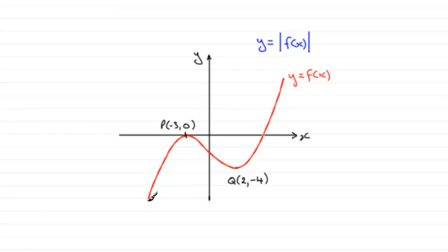Those points, starting from here all the way through here, down here and just to here — these points become positive. That is, you get a reflection of this part of the graph in the x-axis. But this part, because it's got its y values positive, is just going to stay exactly the same.